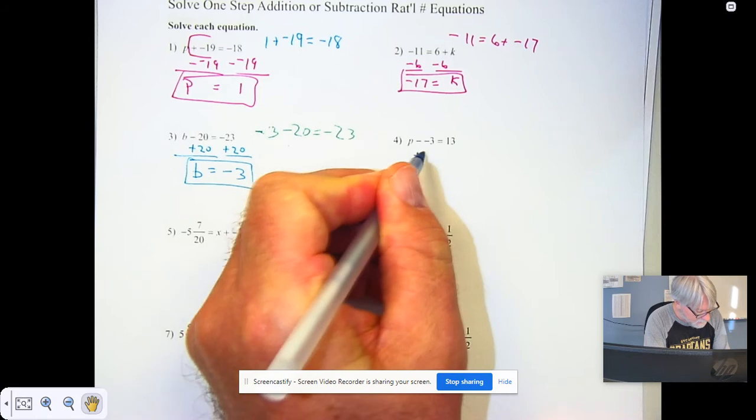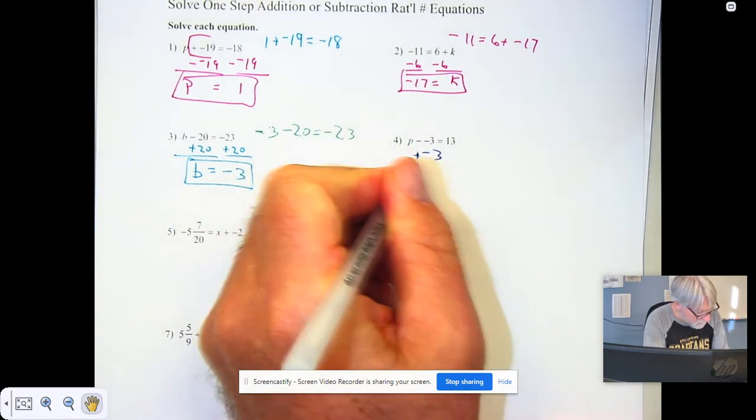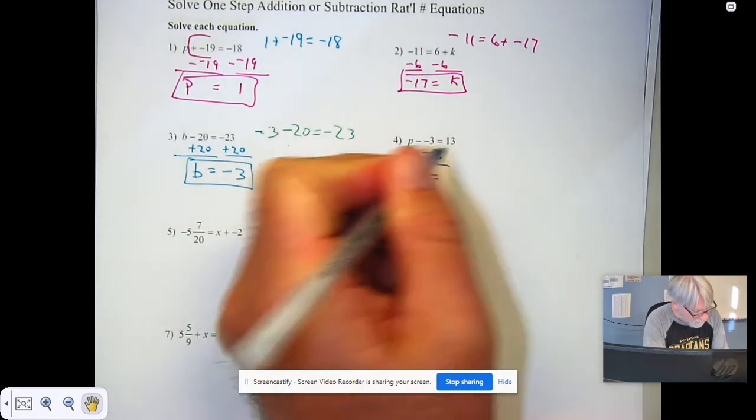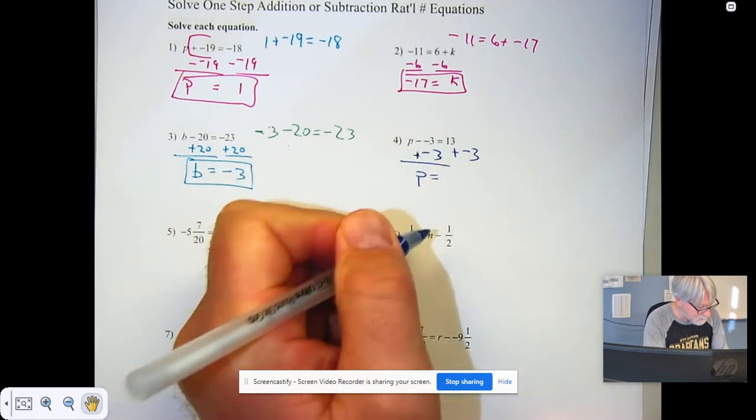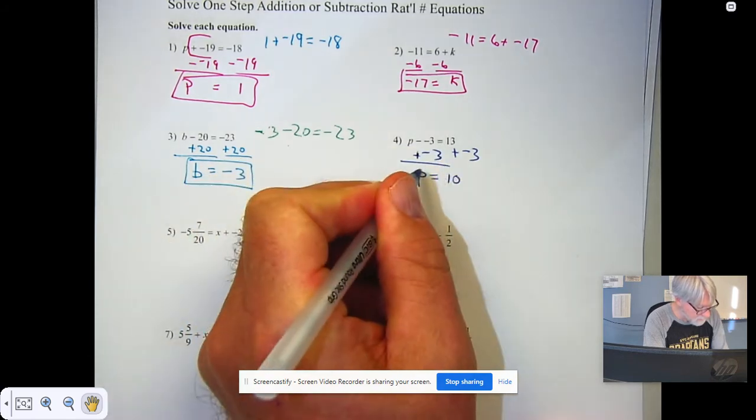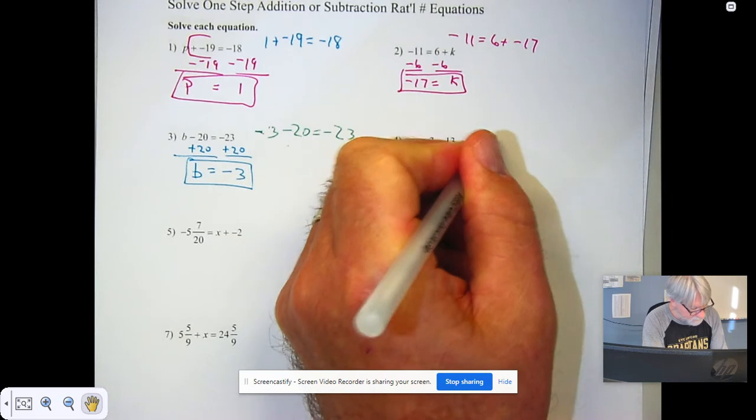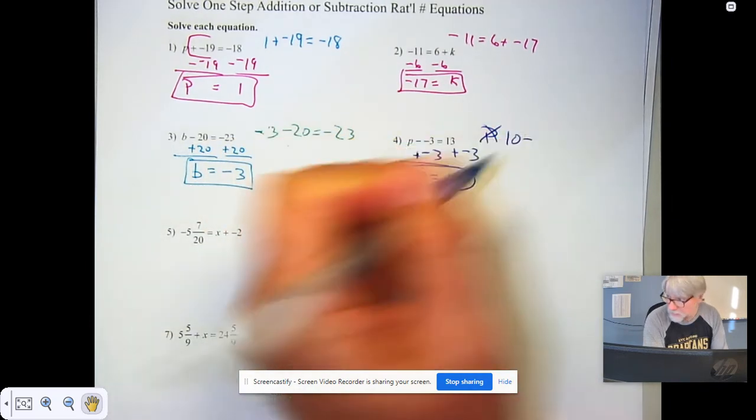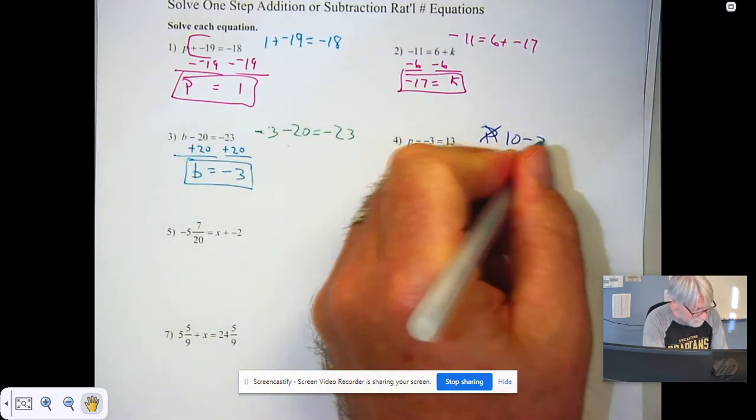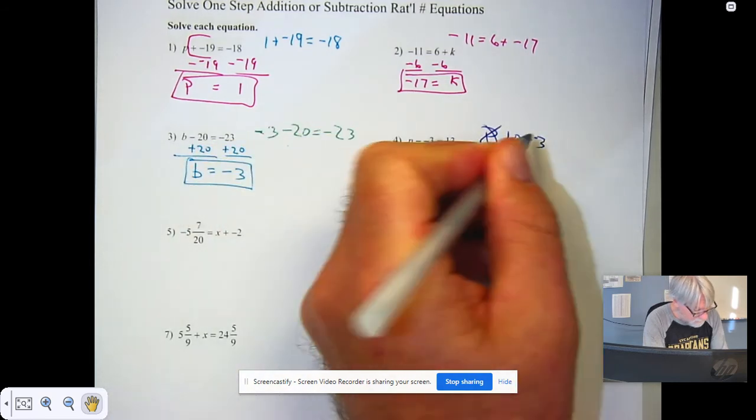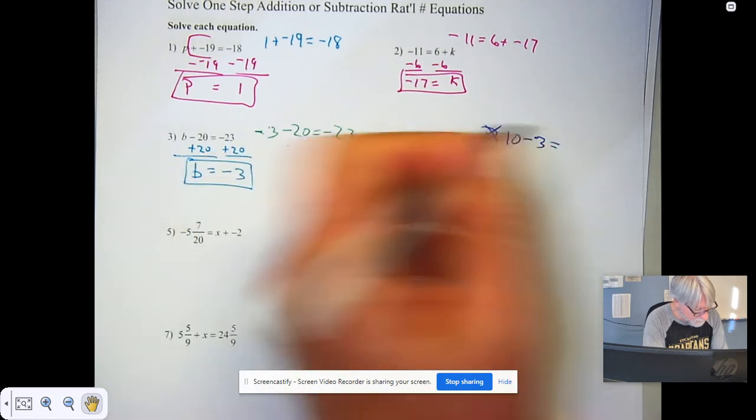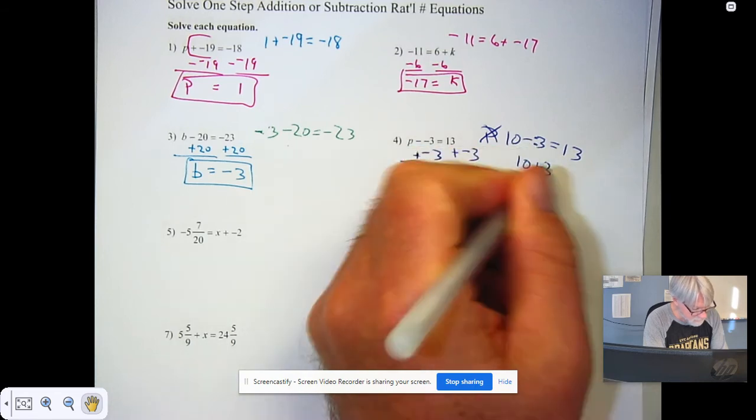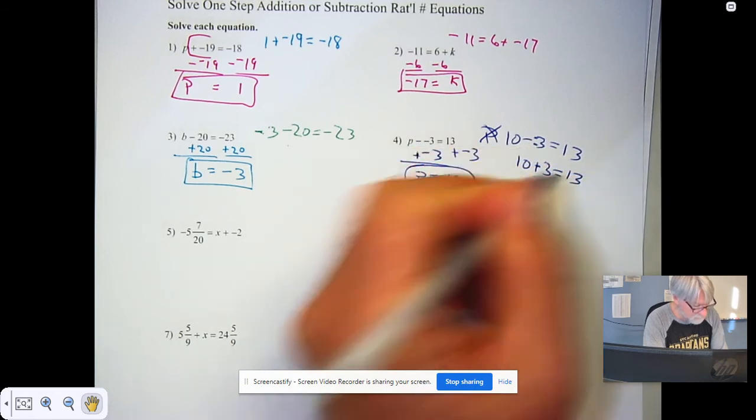Subtracting a negative 3, let's add negative 3. Sorry about that glob there. That gives us P on the left, and when we add negative 3 to positive 13 we get 10 on the right. Is P, check that: is 10 minus negative 3 equal to 13? Yeah, because subtracting a negative is the same as adding a positive, and 10 plus 3 is 13.